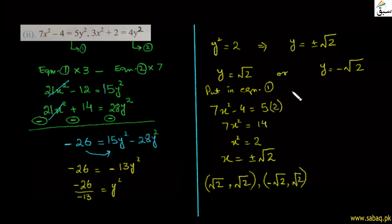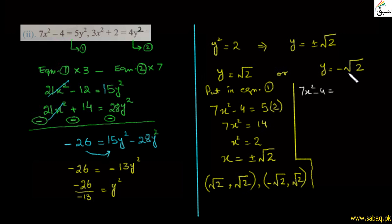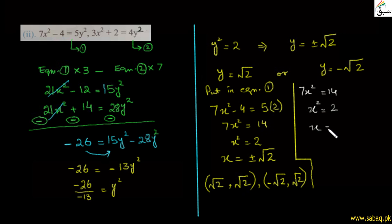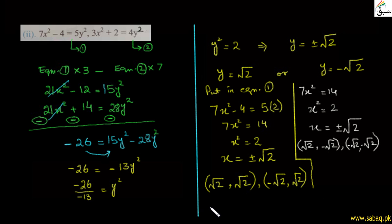جب y = −√2 put کریں تو بھی 7x² = 14، x = ±√2۔ مزید 2 order pairs ملتے ہیں: (√2, −√2) اور (−√2, −√2)۔ چونکہ دونوں quadratic ہیں تو 4 points ملتے ہیں، solution set میں یہ چاروں order pairs لکھیں گے۔